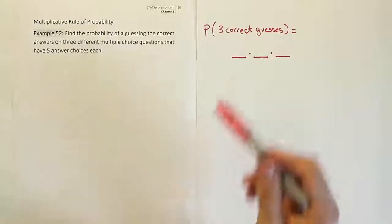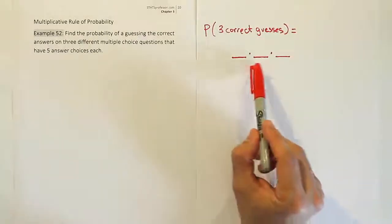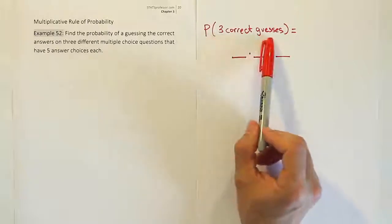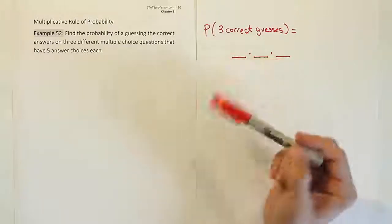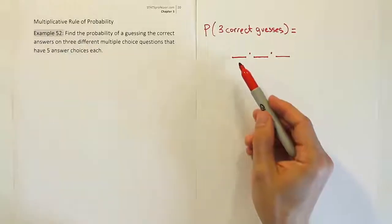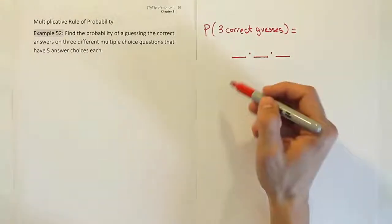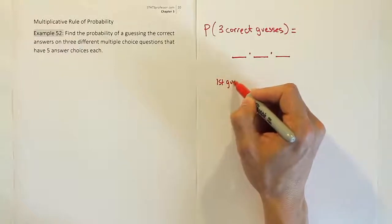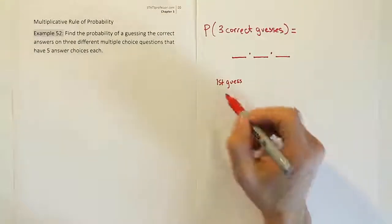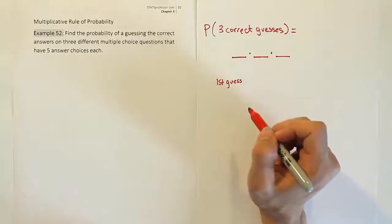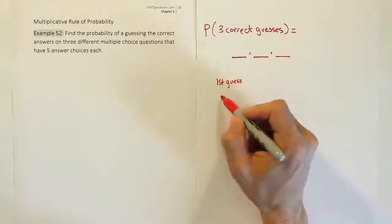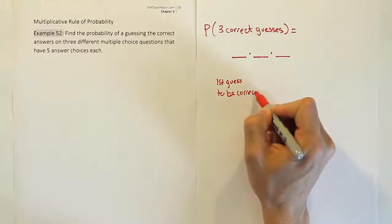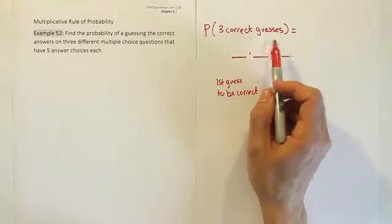So this is the vital part of the problem, that you put as many spaces as there are events. So if there are three guesses being made, you'll need three spaces. And then the next thing you need to do is to think about what that first space represents. You need to say, okay, what is this first space? Well, of course, that's the first guess. And then the question is, what do you want to have happen on that first event? Well, we want the first guess to be correct, because that's what the problem says.